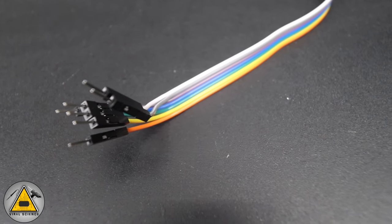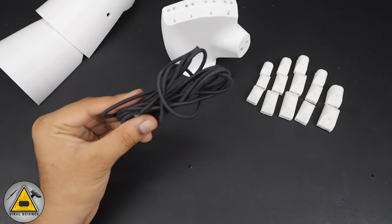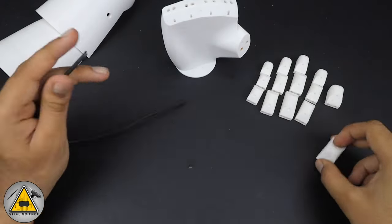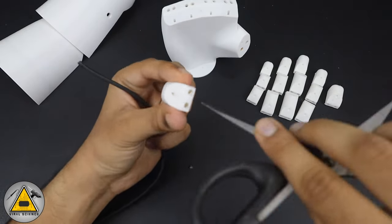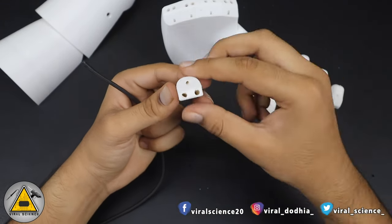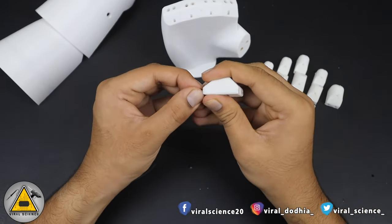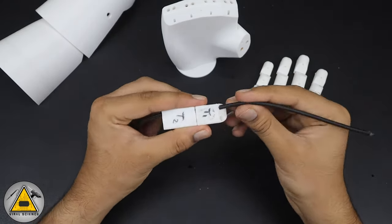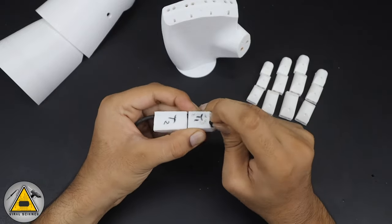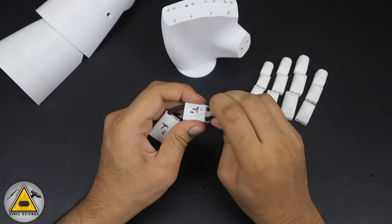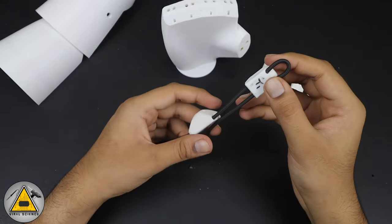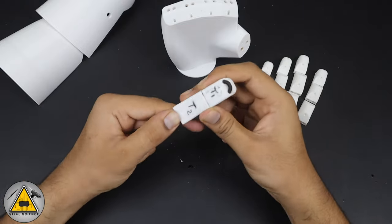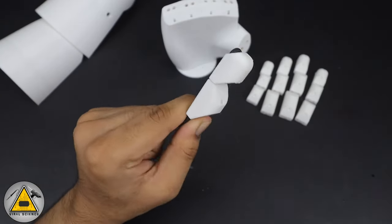So now let's assemble this robo hand. First we'll need this 2mm elastic band. I'm taking a piece of it and first we'll assemble this thumb. So clear out these holes and pass this 2mm elastic band through these holes. Take the second piece, pass through it as well, and again pass from that second piece and again to the first one. So in this way we have to assemble the fingers. So the thumb is assembled because it has just 2 joints.